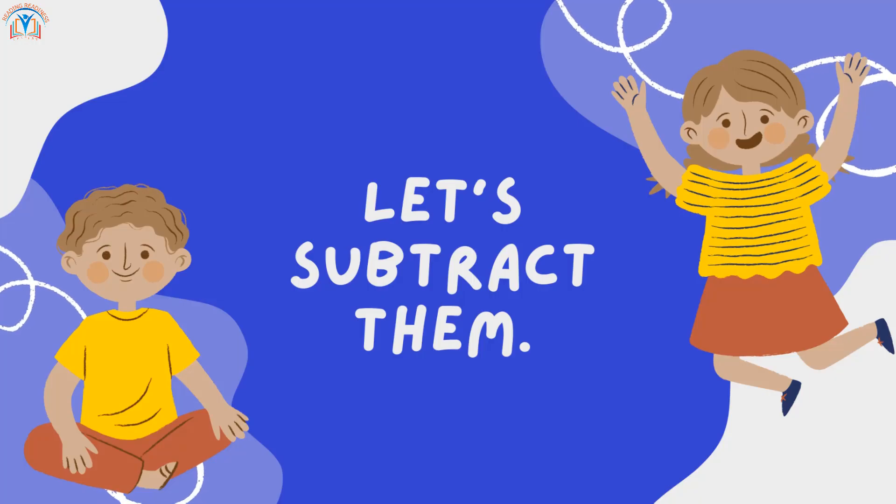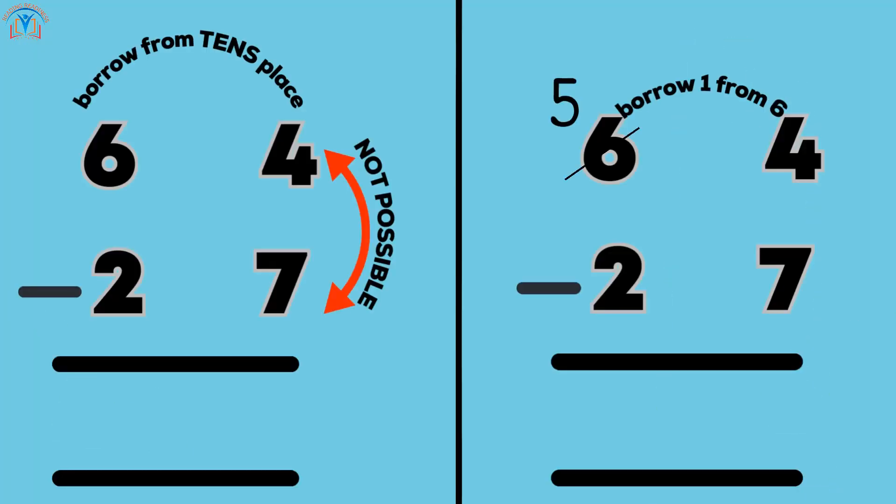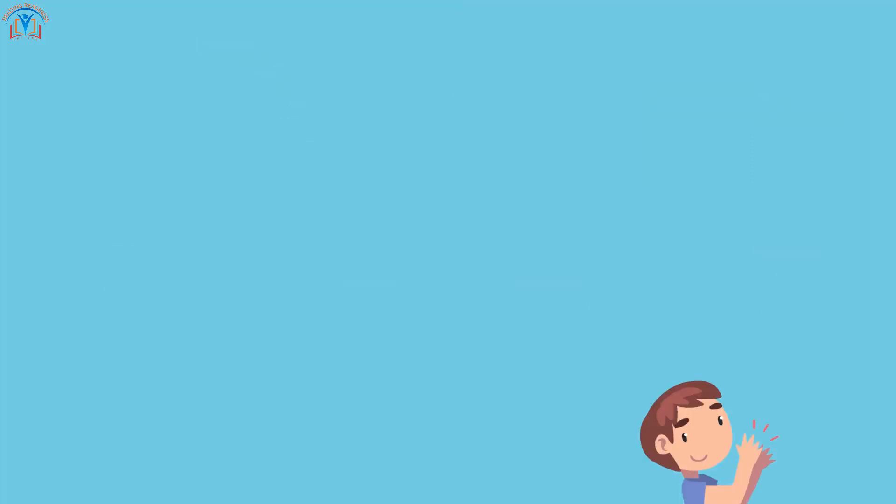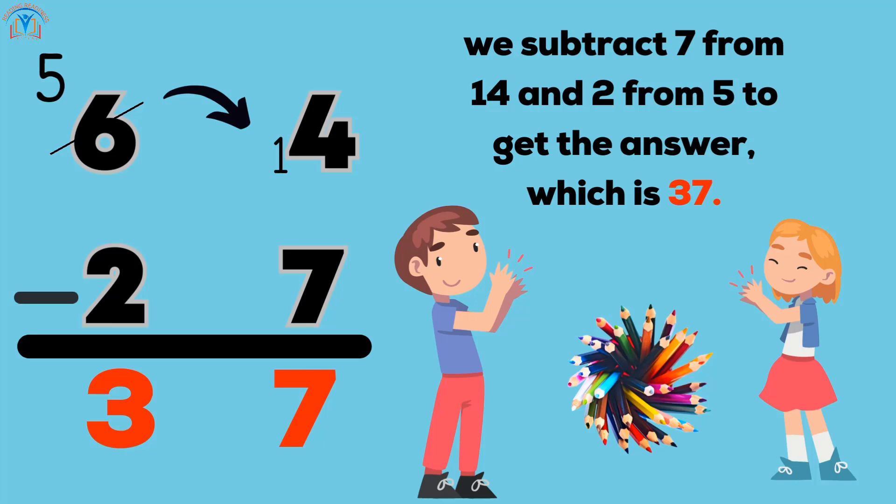Let's subtract them. 4 minus 7 is not possible, so we need to borrow from the tens place. We borrow 1 from 6, which becomes 5, and add 10 to 4, which becomes 14. Then, we subtract 7 from 14 and 2 from 5 to get the answer, which is 37.